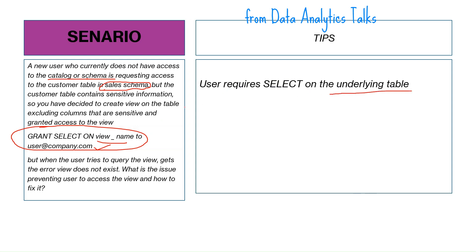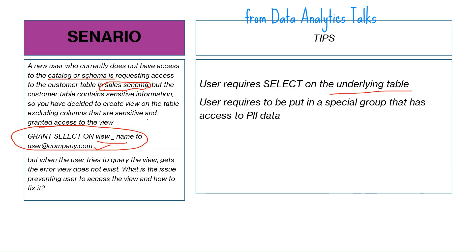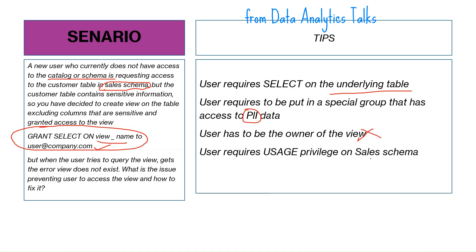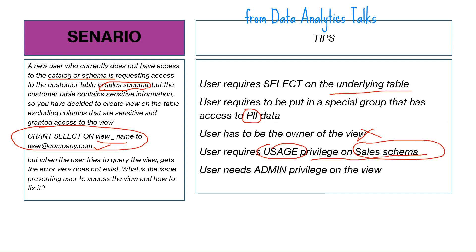Reviewing the options: the user does not need SELECT on the underlying table; being part of a special PII group is not required; the user does not need to be the owner of the view; admin privilege on the view is not required either. The correct answer is: the user requires USAGE privilege on the sales schema, which is what is lacking.